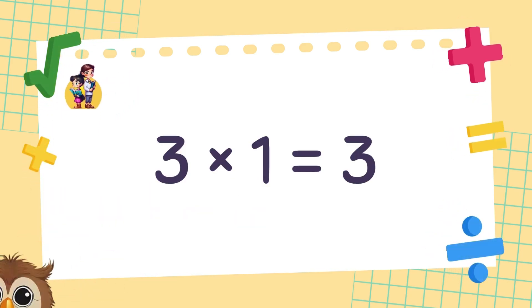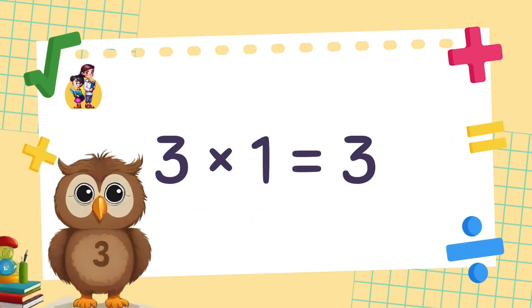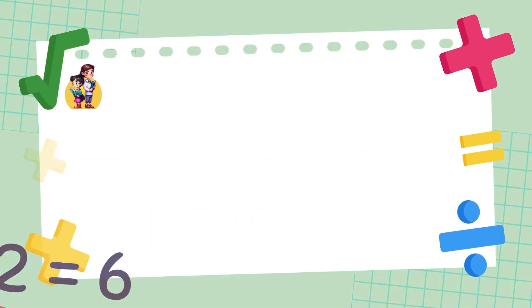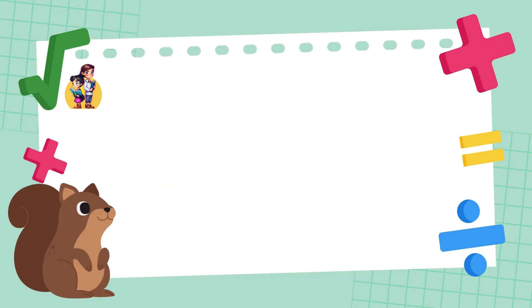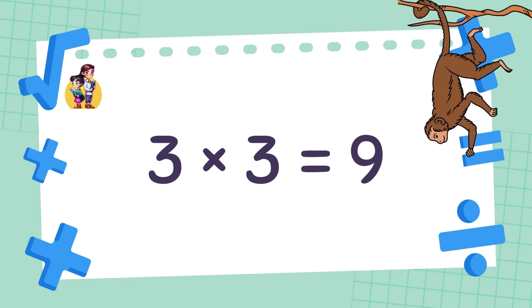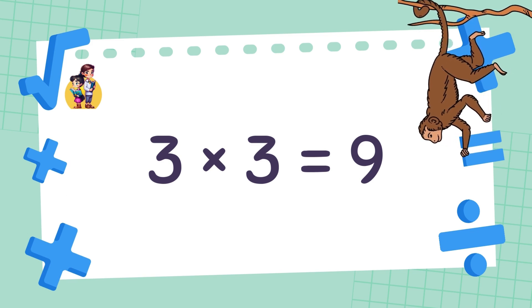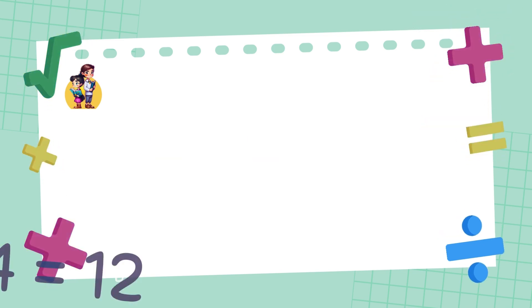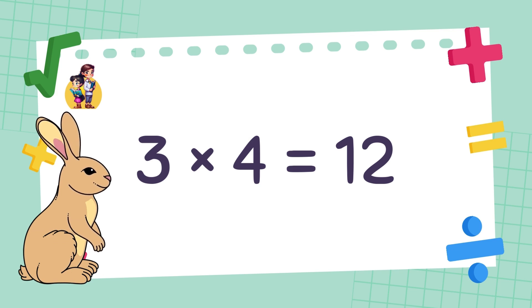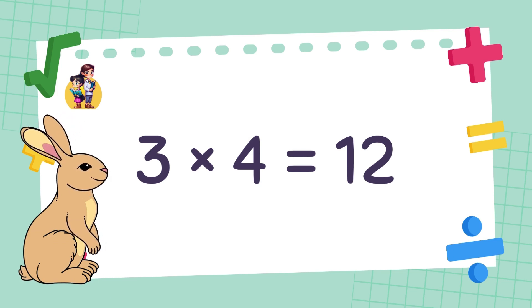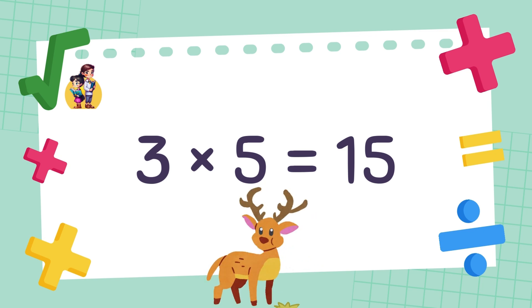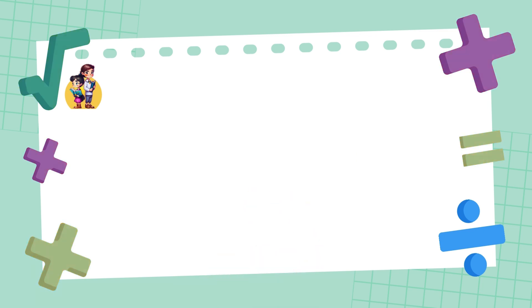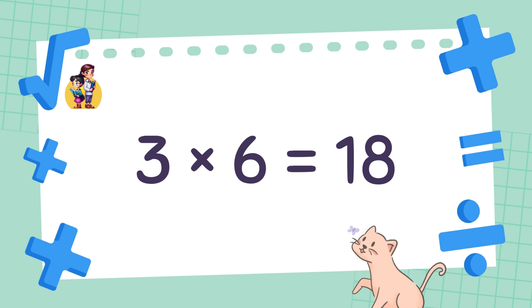3 x 1 is equal to 3. 3 x 2 is equal to 6. 3 x 3 is equal to 9. 3 x 4 is equal to 12. 3 x 5 is equal to 15. 3 x 6 is equal to 18.